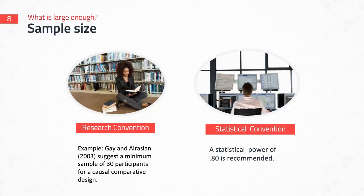SPSS will calculate sample size for you, and G Power will do it as well. Some statistical texts have formulas for specific designs and analyses — for example, for multiple regression, Warner or Tabachnick and Fidell suggest 108 plus the number of variables you're studying. You can look in analysis texts for specific information, but in addition to all the other elements discussed, you need to talk about sample size in a research proposal.